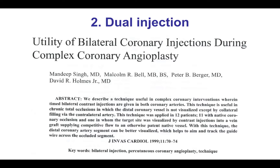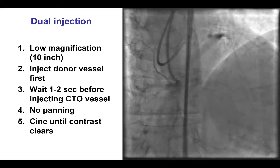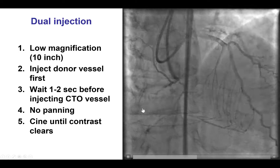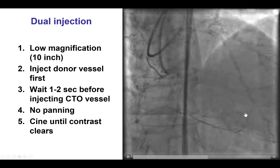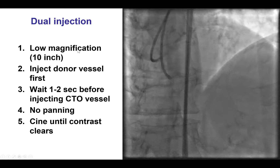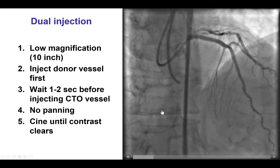The second key principle is performing a dual injection. Dual injection means injecting both the occluded coronary artery as well as the contralateral donor vessel, which is either the contralateral coronary artery or a bypass graft. This technique, described 18 years ago, is key because it allows better understanding of the anatomy of the occlusion — namely where the occlusion starts, the occlusion length, the distal vessel, and the presence and extent of collaterals. Dual injection should be performed ideally at low magnification so that there is no need for panning because the entire heart can be within the imaging territory.